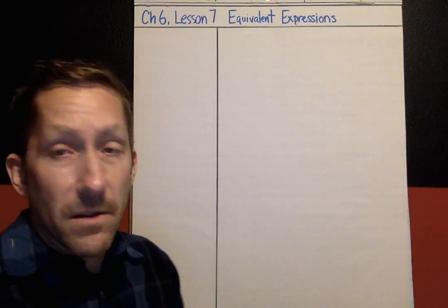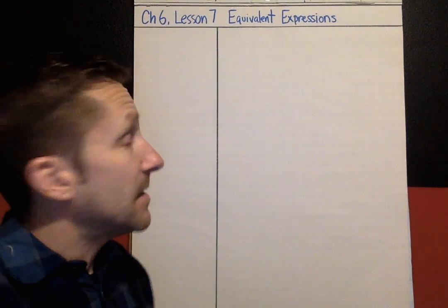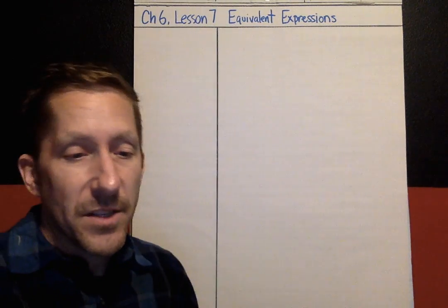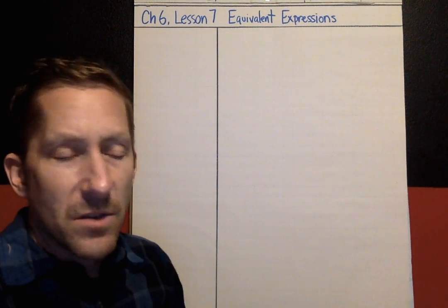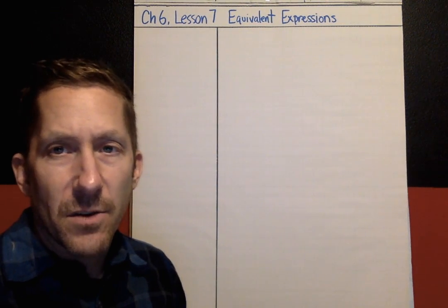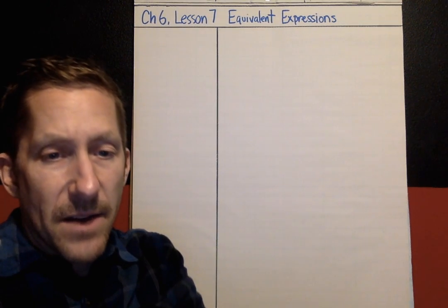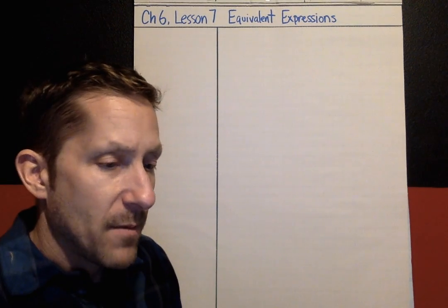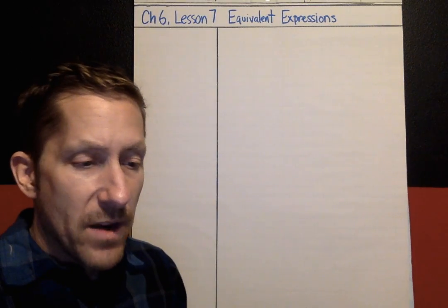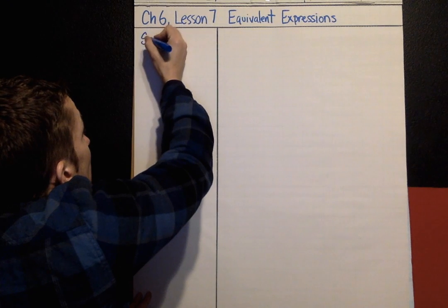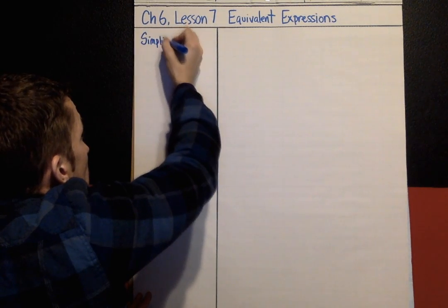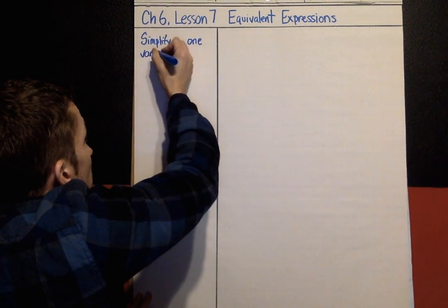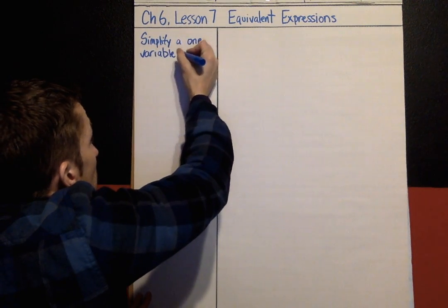Hey middle schoolers, this is Chapter 6, Lesson 7 — the last lesson in Chapter 6. Today we're going to be working with equivalent expressions, changing expressions using properties and combining like terms — things we've already talked about in this chapter. We're going to be combining a few ideas. The first kind of problem I want to look at is simplifying a one-variable expression.